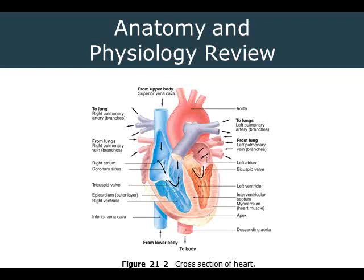The right side receives deoxygenated blood from the body via the superior or inferior vena cava, which dumps into the right atrium, down through the tricuspid valve into the right ventricle. The tricuspid valve is assisted by the papillary muscles and chordae tendineae — like parachute cords — and the ventricle contracts to push blood up through the pulmonic valve.